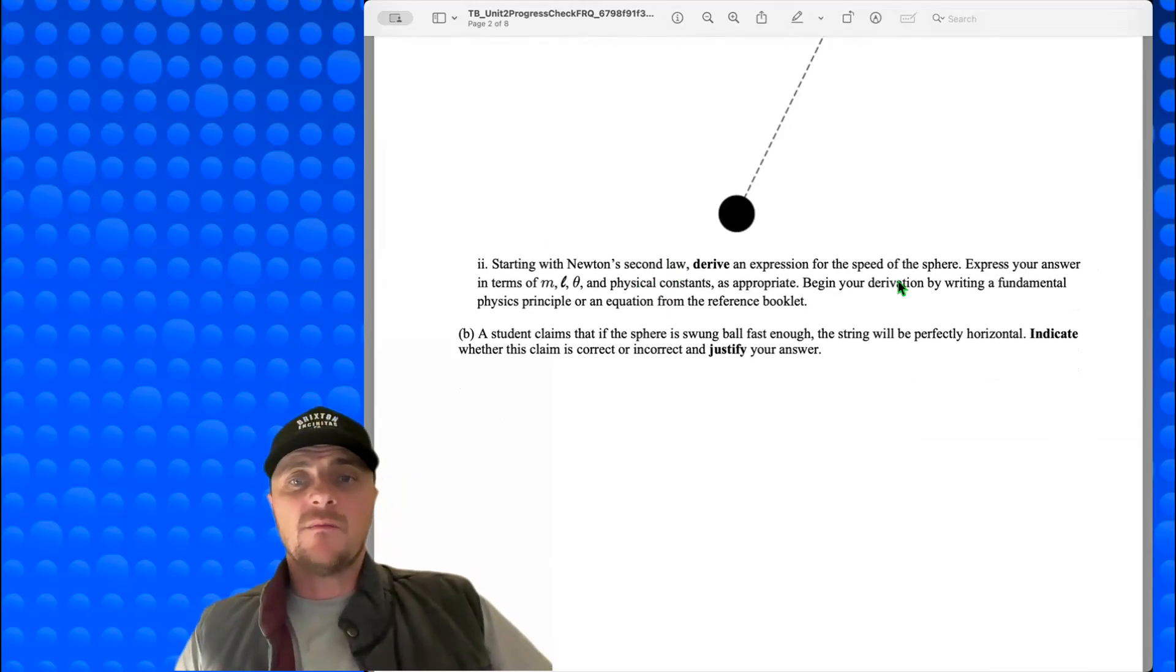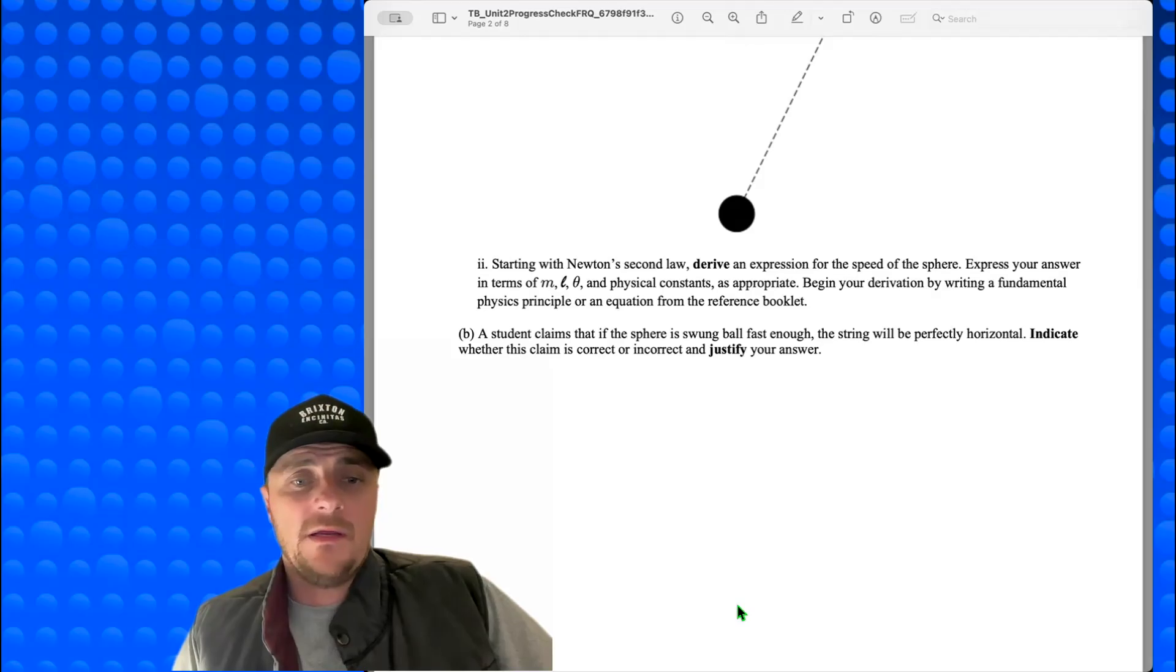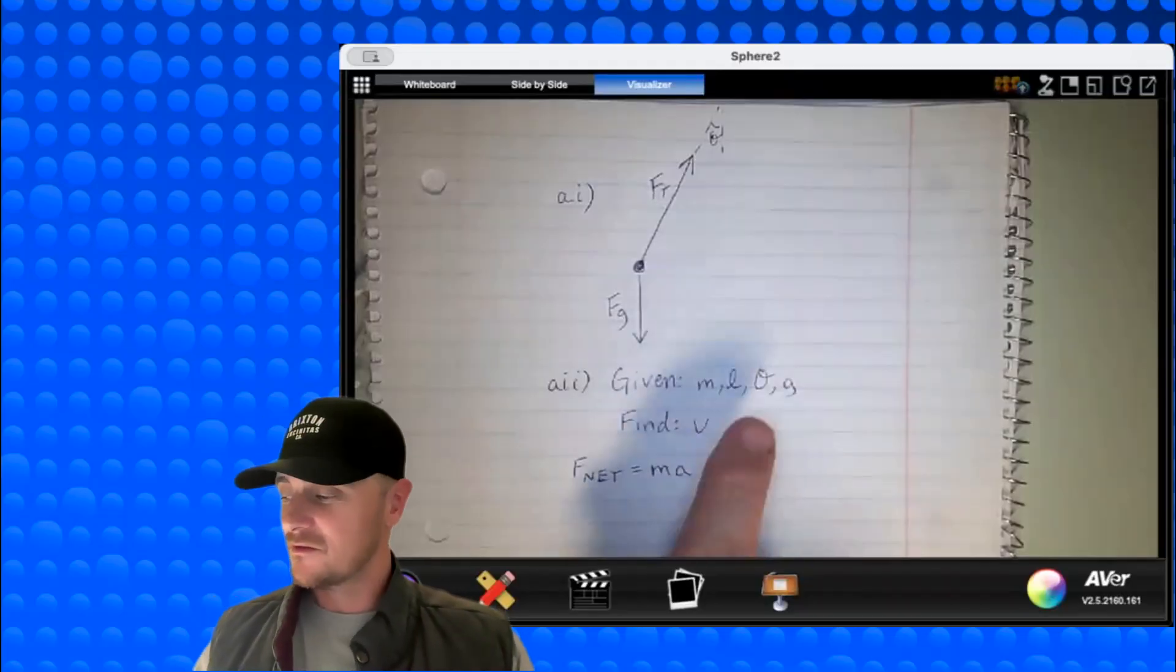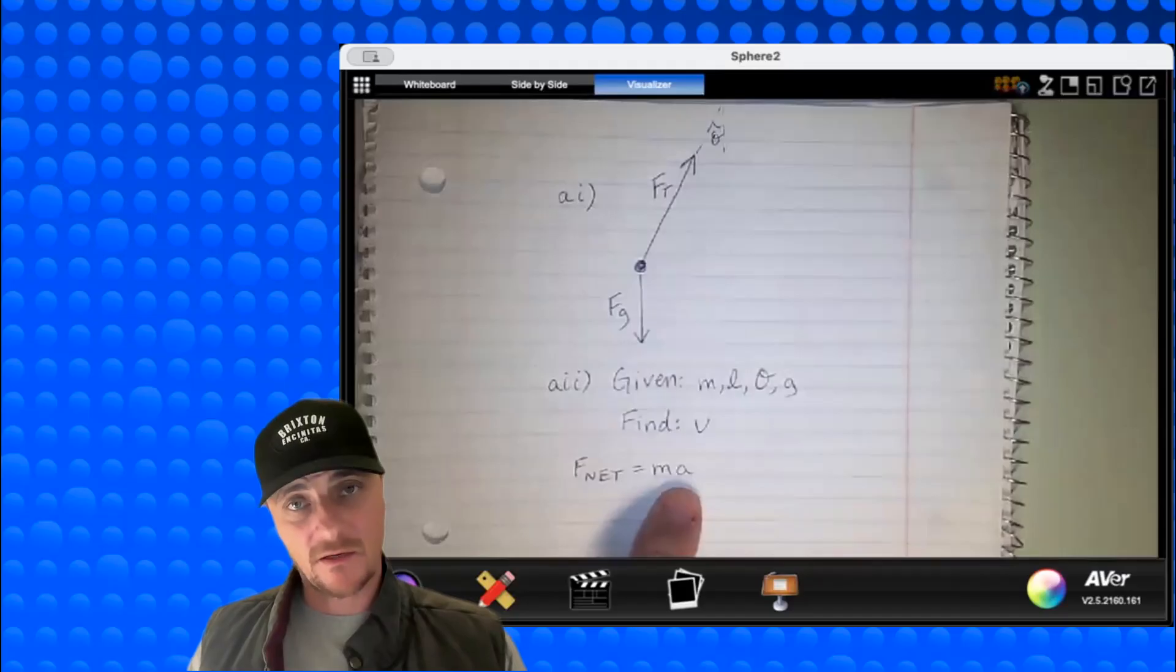Begin your derivation by writing a fundamental physics principle or an equation from the reference booklet. And they already gave it away, it's right here. We need to write Newton's second law, okay? So let's get back over to the paper. Okay, so we got our givens, we got the velocity that we're looking for, and we have Newton's second law.